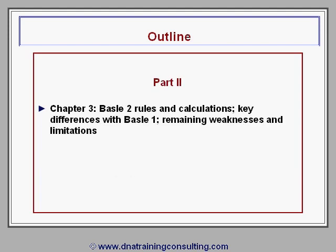In Part II, Chapter III summarizes the rules and calculations underpinning Basel II, explains the key differences with Basel I and why these differences were felt necessary, and highlights some of the remaining weaknesses and limitations of the standard.